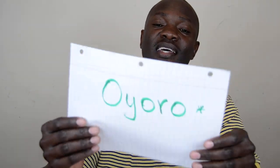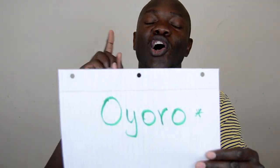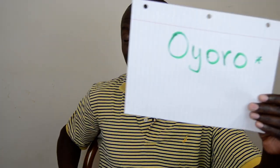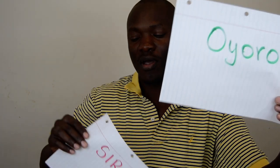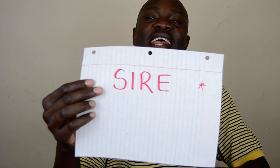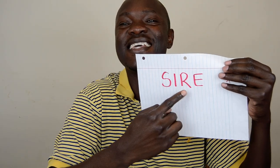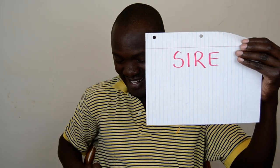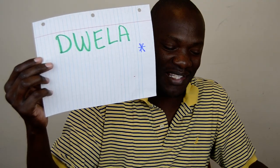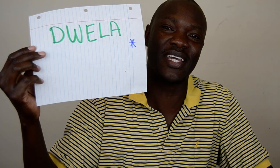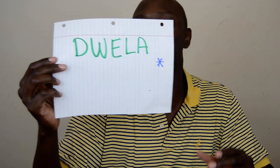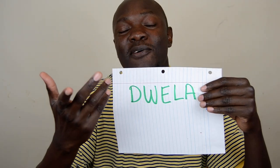There are some fish that I do not know their names. If you know their names, please help us. There is one called Oyoro — I don't know the English name. There is Sire, and there is Dwella. These three I don't know, so if you know about them, please help us out.